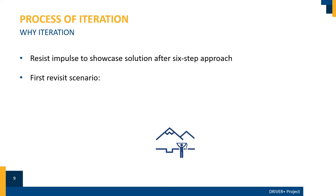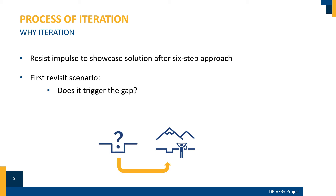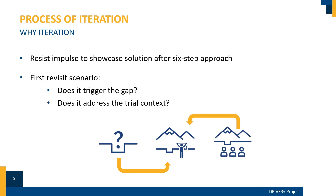One thing that might come to mind after the first round of the six-step approach is to directly showcase the solution's functionality to your supervisor and colleagues. But you should resist this impulse. This is about bridging a real crisis management gap that is embedded in a realistic scenario. It is absolutely okay to revisit the scenario and tweak it a bit. The scenario has to trigger the gap and address your trial context. In the end, you want to know if this solution really addresses your specific gap in your specific context. If it turns out this solution does not bridge your gap, so be it — always stay true to your gap and your trial context.